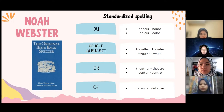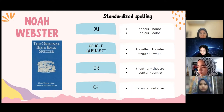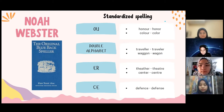Words containing the letters O-U: Noah Webster would eliminate the O-U by spelling it as Honor, H-O-N-O-R, and Color, C-O-L-O-R. The next example is double letters: for example, Traveller becomes T-R-A-V-E-L-E-R, and Wagon, W-A-G-O-N. And spellings containing E-R will be replaced with R-E, for example theater, T-H-E-A-T-R-E, and center, C-E-N-T-R-E.